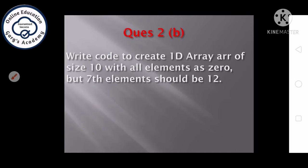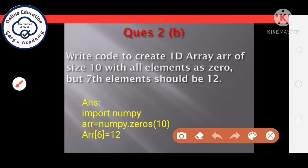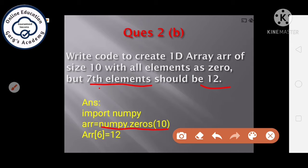Next question, write code to create 1D array of size 10 with all elements as 0, but 7th element should be 12. So students, we have many functions to create array, but the most convenient here, we can use a zeros function in this way. First, we will write numpy dot zeros with argument 10. It will create an array with all values 0 and size 10, means 10 elements. After that, we have to change the 7th element as 12. So we will write array of 6 equal to 12. How it will change the 7th element? Because index starts always with 0.